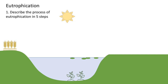In this revision video on eutrophication, there is just one task and that is to describe the process in five steps. You can pause the video and do that. If you haven't got a clue, you can just stare at this lovely scene and imagine you're in a field on a warm summer's day. For those of you who want to have a go, list the steps and then press play when you want to reveal the answer.